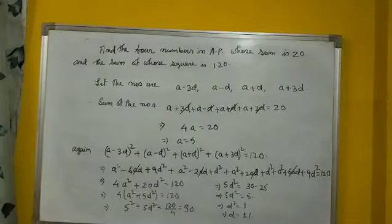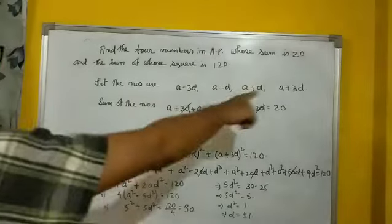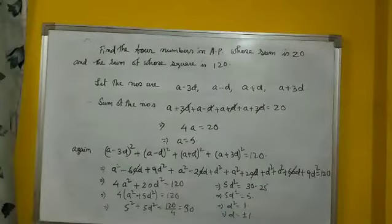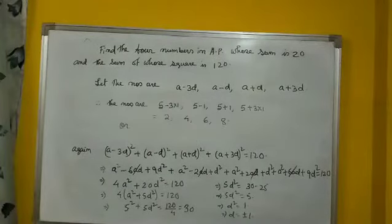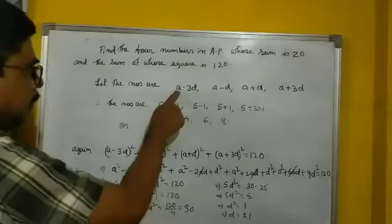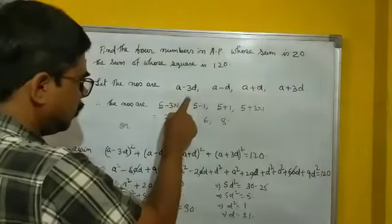And after getting that D equal to plus minus 1, you find out the numbers now. Now, the numbers are, what are the numbers now? So the numbers are what?